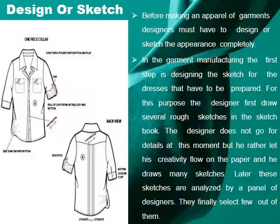The first step is designing. Before making a garment or apparel, the designer must design or sketch the appearance completely. The designer first draws several rough sketches in a sketchbook, not going into detail at that moment, but letting creativity flow on paper. These sketches are later analyzed by a panel of designers and a few are finally selected.